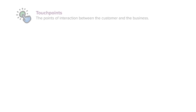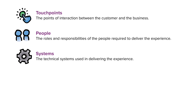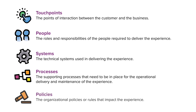Let's walk through each of these. Touch points are points of interaction between the customer and the business. People are the roles and responsibilities of the people required to deliver the experience. The systems are the technical systems used in delivering the experience. Processes are the supporting processes that need to be in place for the operational delivery and maintenance of the experience. Policies are the organizational policies, rules, or best practices that impact the experience.